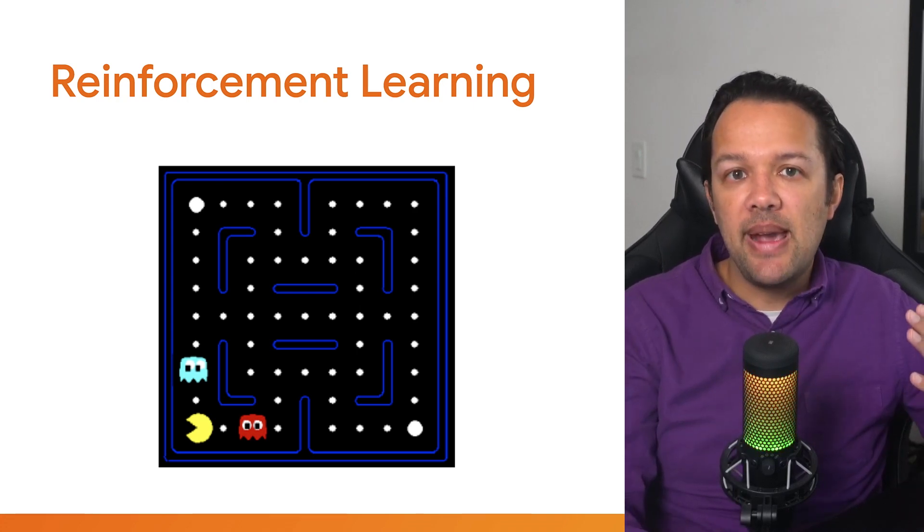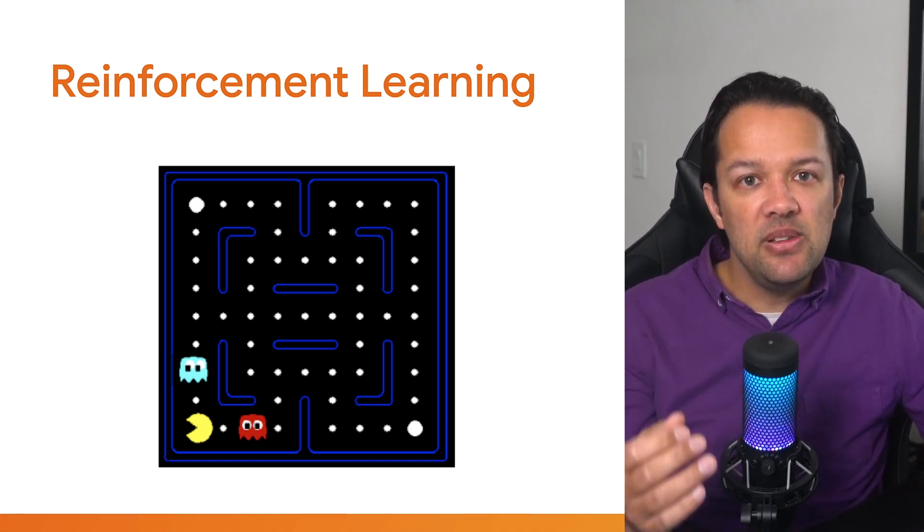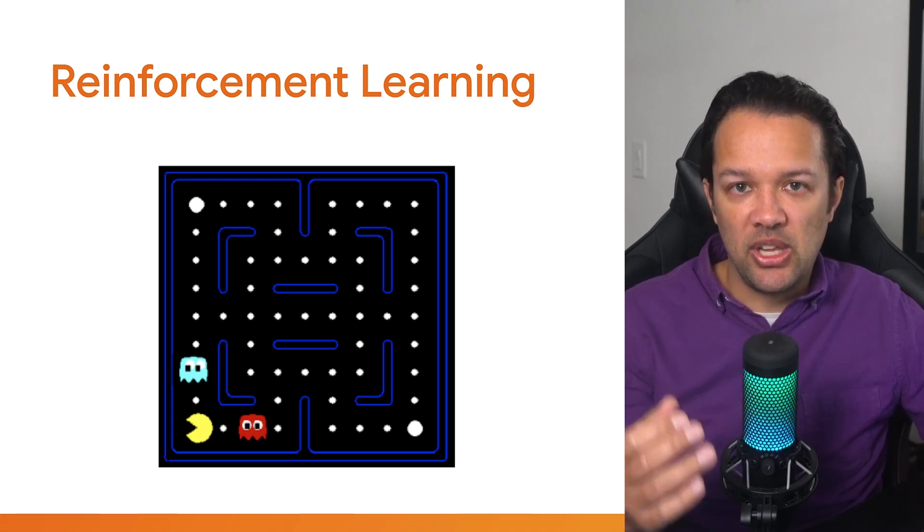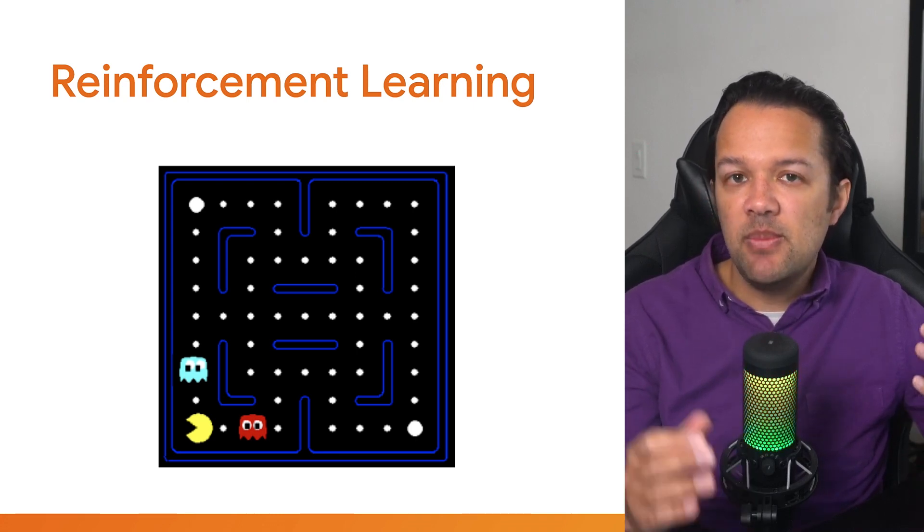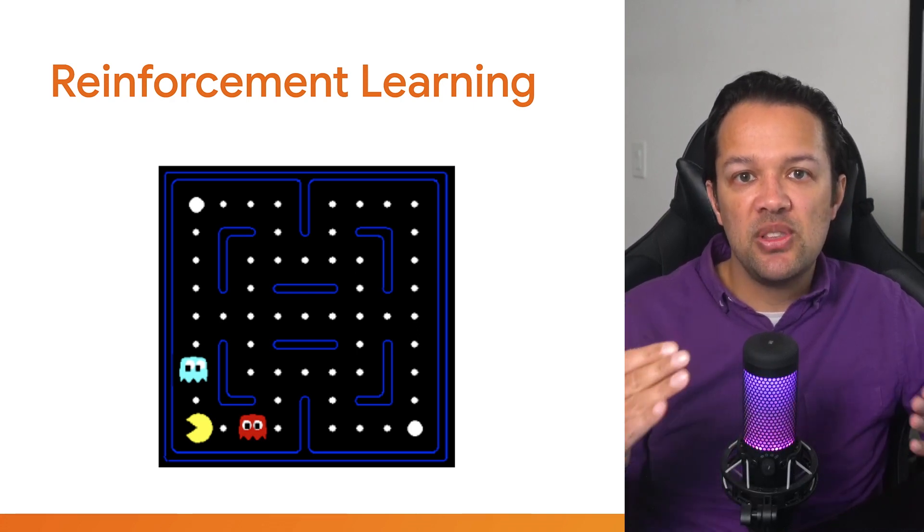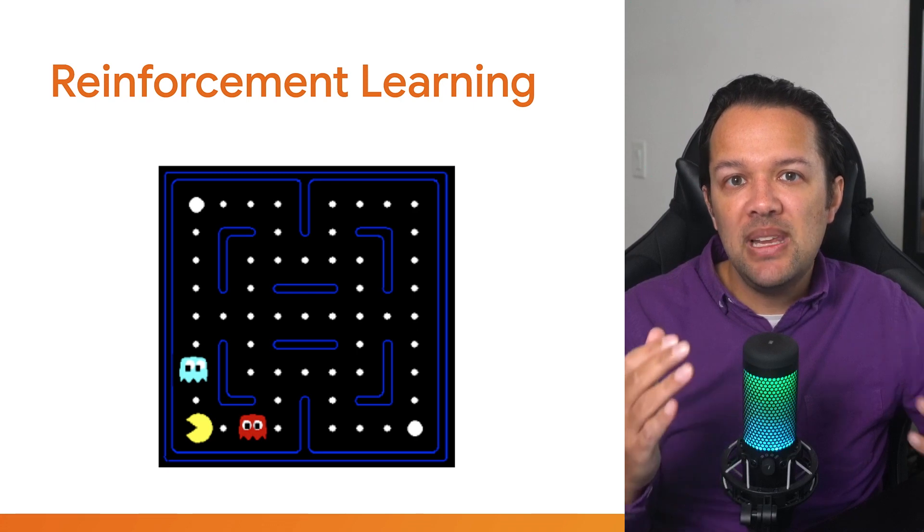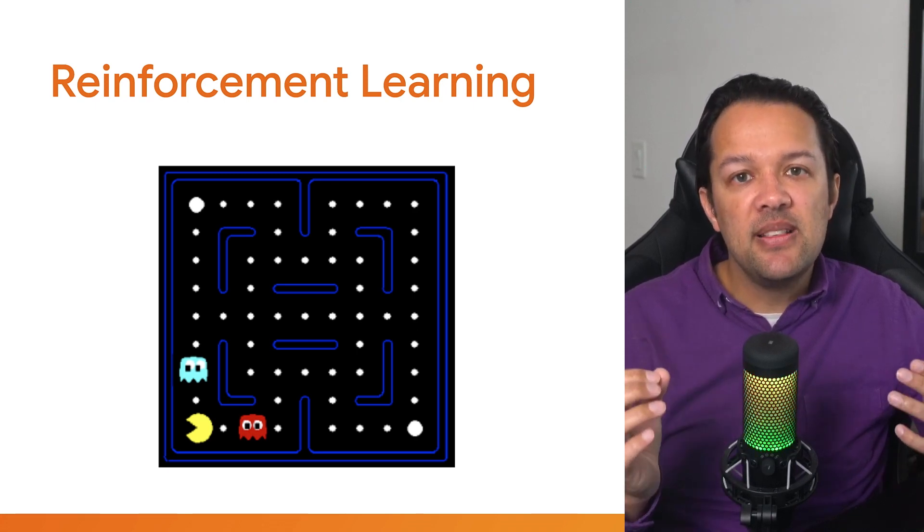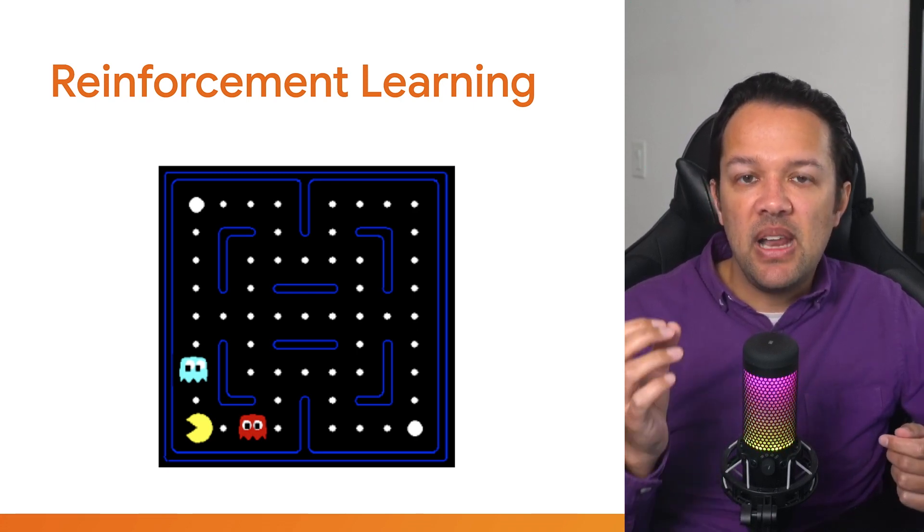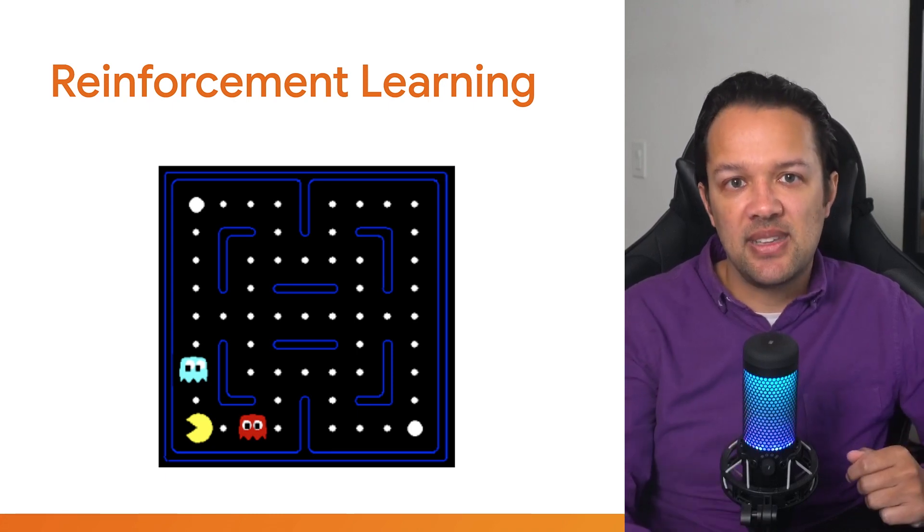Each time it makes a winning move, it strengthens the connections for the things that it did previously, and if it loses, it weakens the connections to what it tried. Given some inputs like the image pixels from the game, it can then explore different combinations of available actions that it can perform through thousands or even millions of iterations, until it finds a combination of rules that link the inputs to the outputs, such that it can perform well at the task at hand.